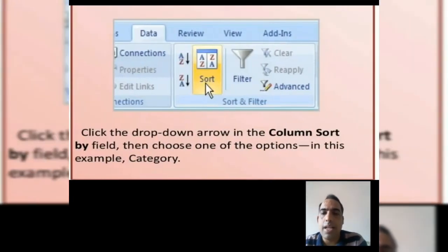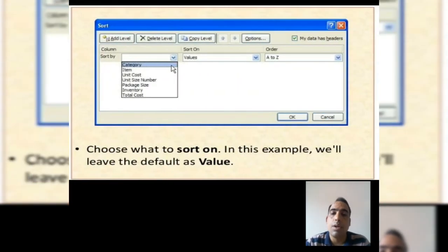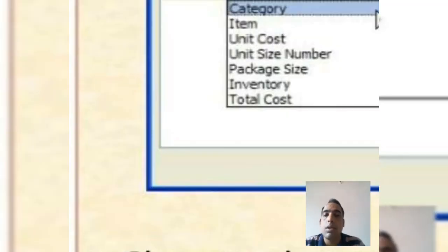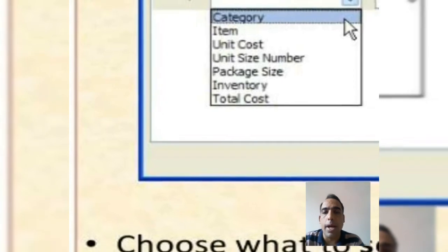Click the drop-down arrow in the column sort by field, then choose one of the options. In this example we have selected category option. You can see in this diagram we have selected category option in sort by.